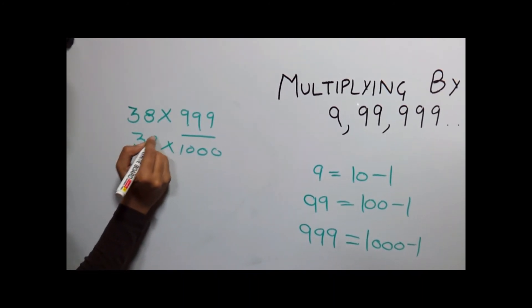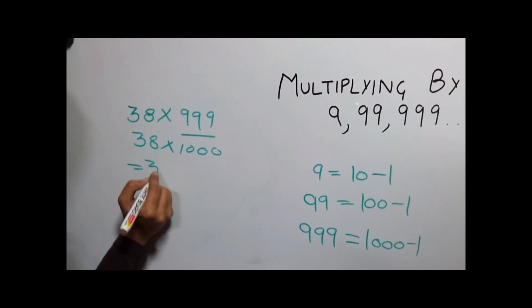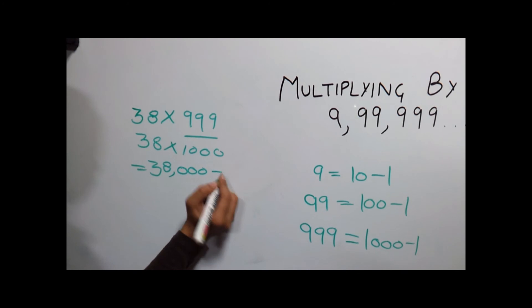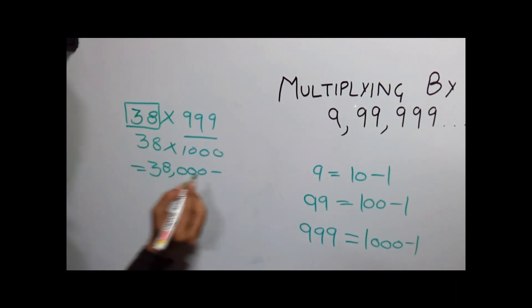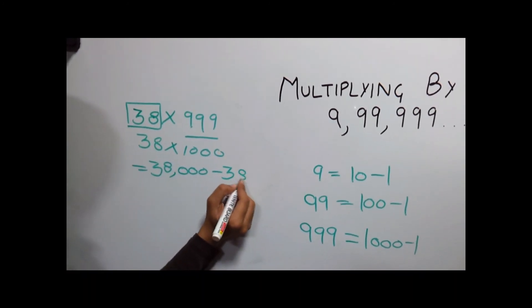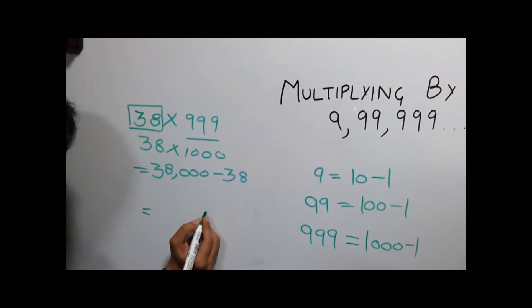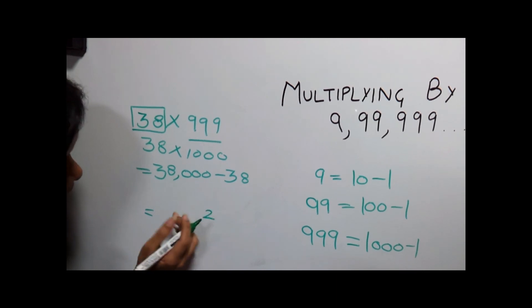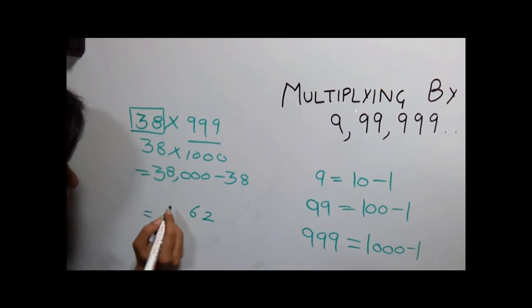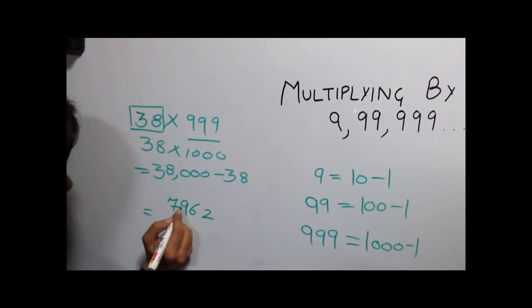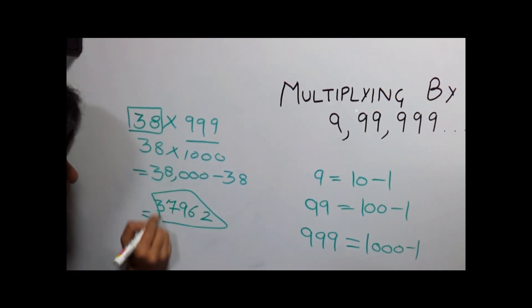Multiplying it with 38 gives us 38,000. Subtract the original number which is 38. Subtracting gives us 9-8 gives us 2, 9-3, 6, then 9, 7, 3 as the answer.